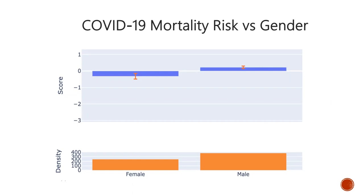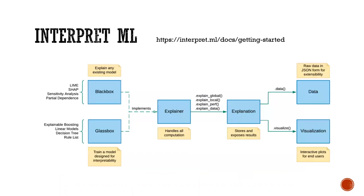Regarding explainability in deep learning models, that belongs to explainable ML rather than interpretable ML. People have also been developing interpretable deep learning models. If you have a mature deep learning model already applied in bioinformatics, in the next session on explainable ML we'll talk about adding explanation models on top of that deep learning model.